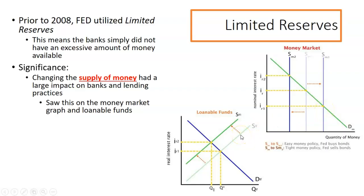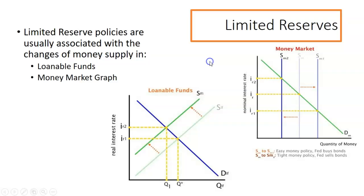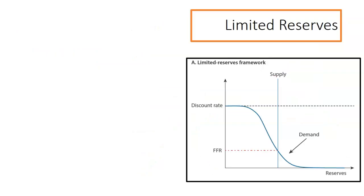Changing the supply of loanable funds — the excess reserves of the banks — would change the interest rates for when you borrow money. So all these monetary policies: open market operations, discount rates, reserve requirements, targeting the federal funds rate — they played a really large role in managing banking systems, interest rates, and therefore how customers would be more likely to borrow money or to invest money. So the limited reserves from College Board is first about changing the supply of money, seen in the loanable funds graph, the money market graph, and reserve requirement conversations.